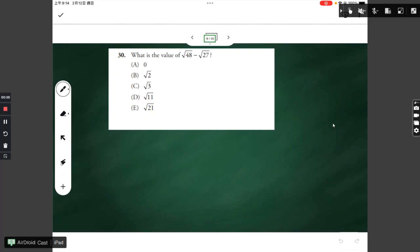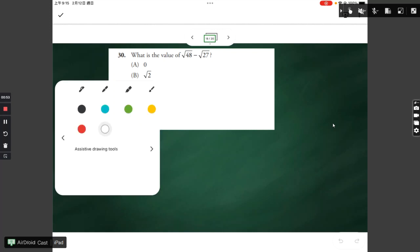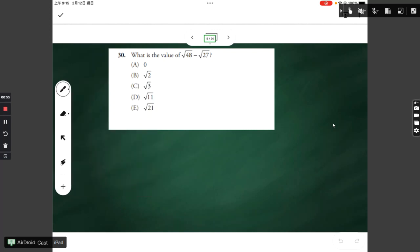Today let's work on an ACT math question. This question wants to calculate the square root of 48 minus square root of 27, so let's start by writing.